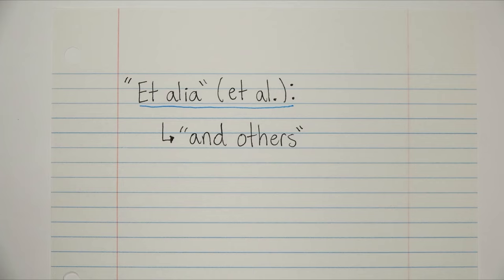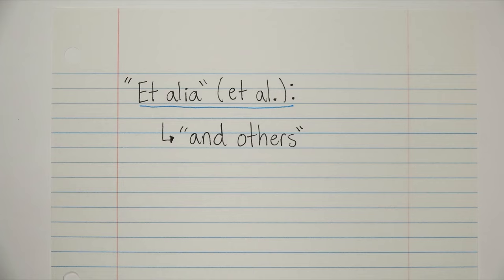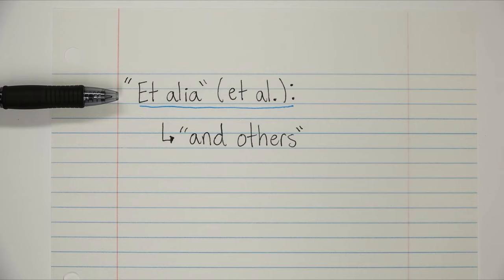Okay, now on to our third and final abbreviation, et al., which comes from the Latin phrase et alia, meaning and others. So et al. is basically the same thing as et cetera, which we've covered in a previous lesson, only it's used with people, not things.